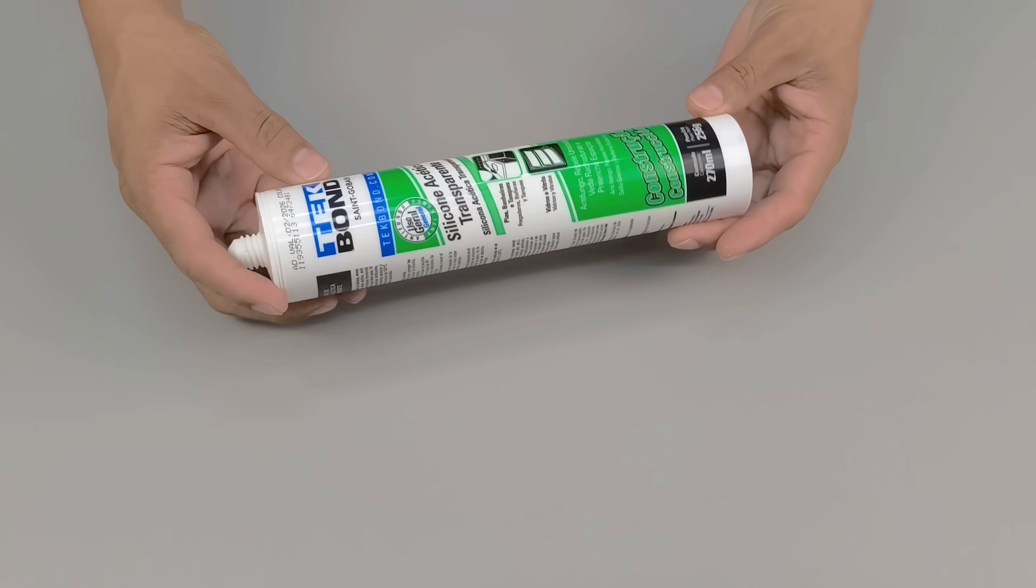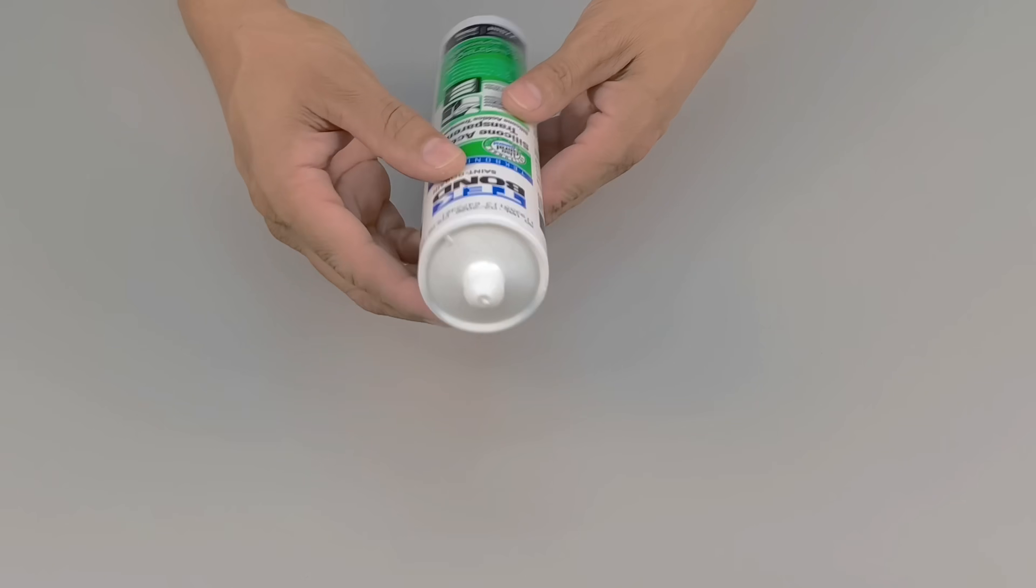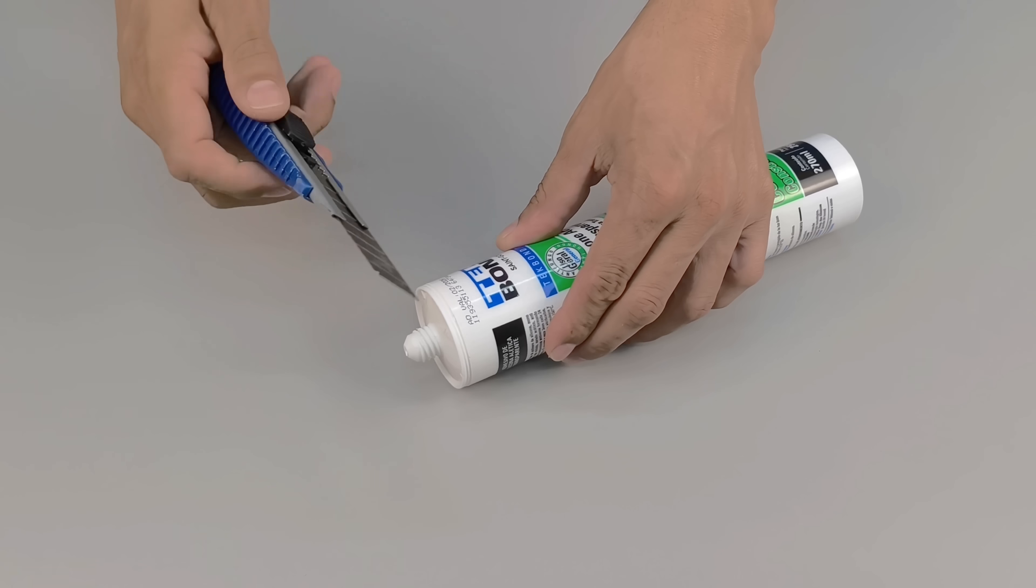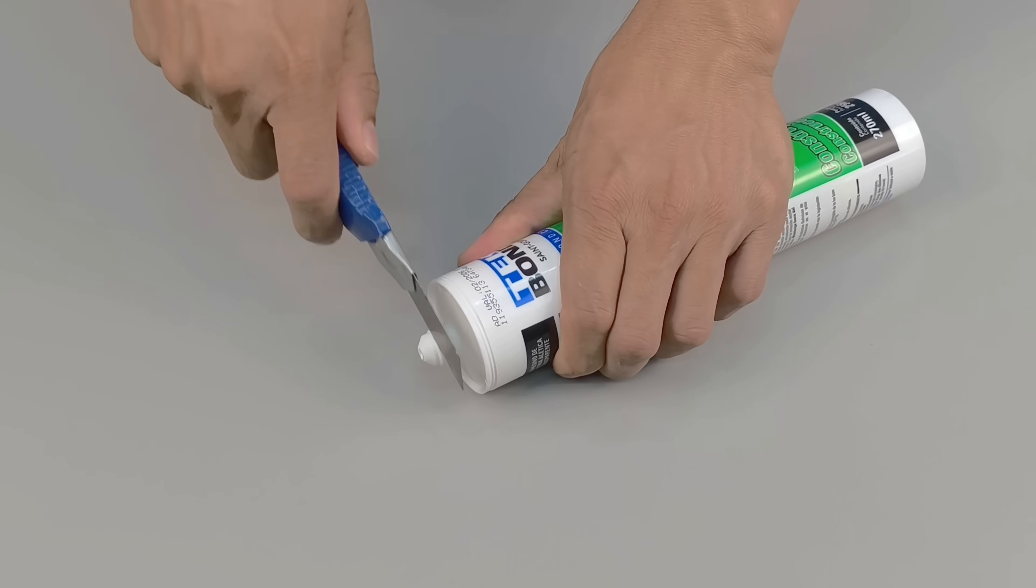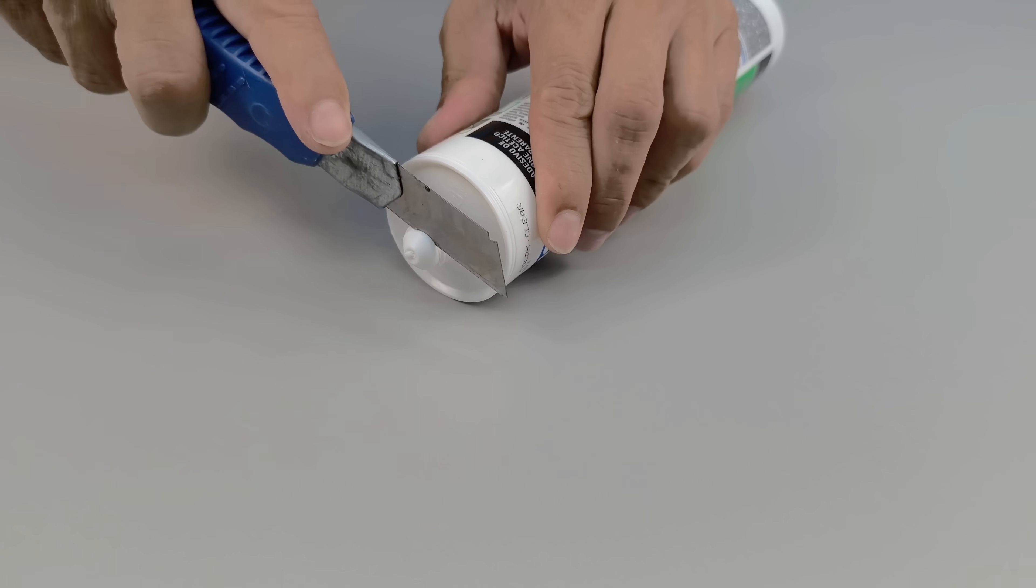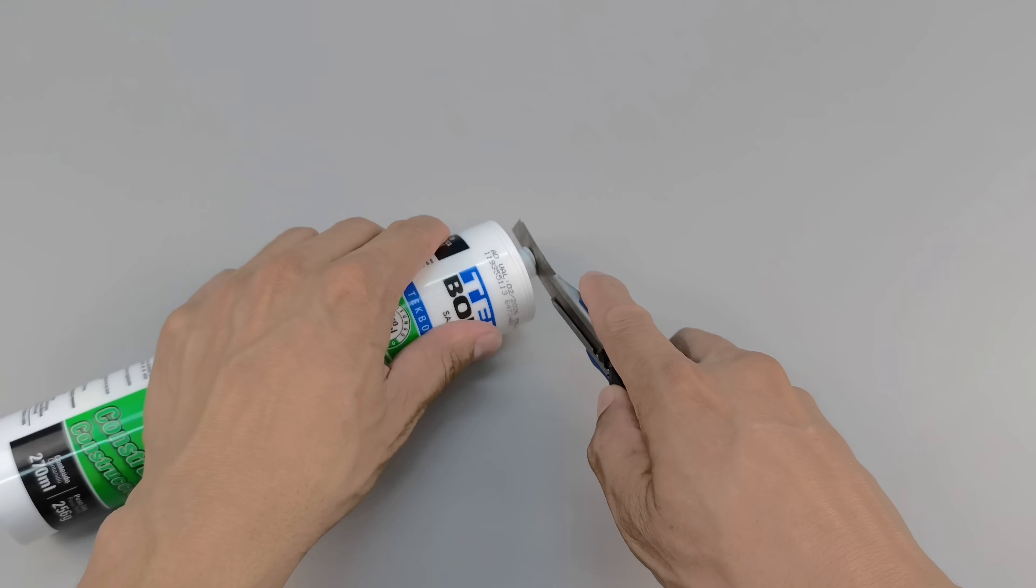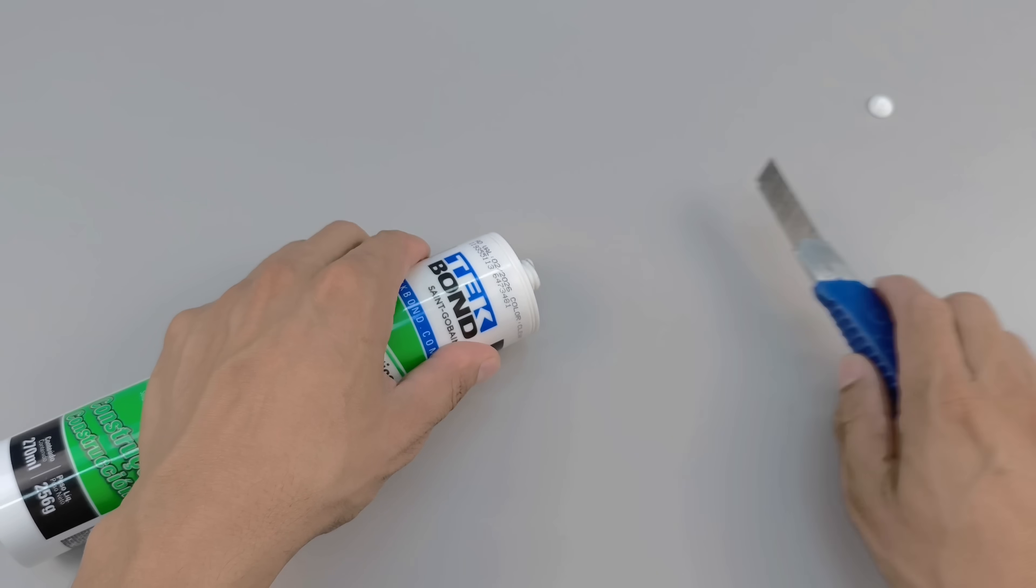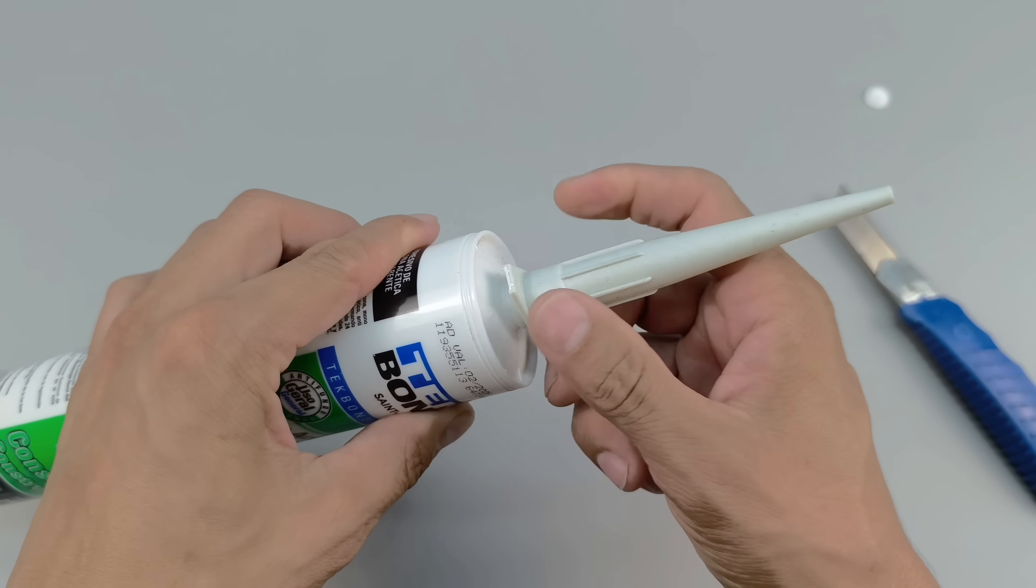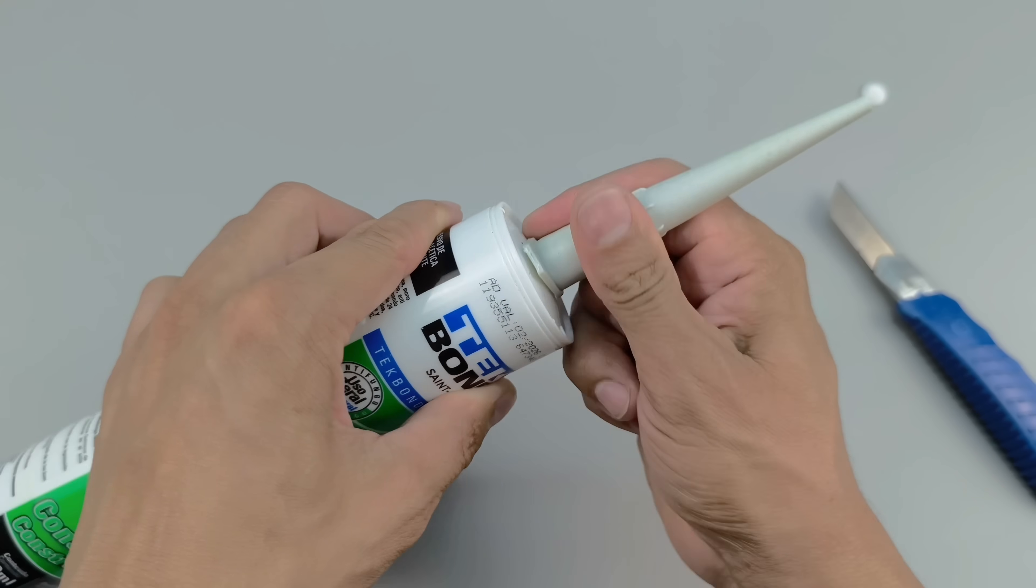Have you ever wondered what might happen when you mix silicone with cement? At first glance, this combination may seem pointless, even strange or incompatible, but the truth is that it holds surprising potential. In this video, you'll learn a simple yet powerful formula that many people overlook, and that can be extremely useful in many everyday situations, especially when it comes to quick, strong, and durable home repairs.